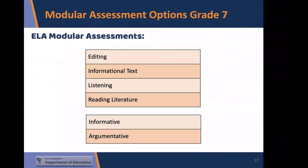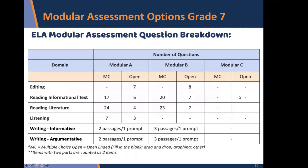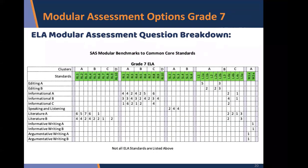For seventh grade, you have the exact same domains as sixth grade. Options for editing include A and B; reading informational text has A, B, and C; listening has one; reading literature has A and B; and for writing, there are two argumentative and two informative. There's also a question breakdown for seventh grade showing how many multiple choice or open questions there are per modular, along with a Common Core standard mapping.